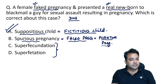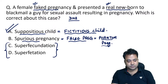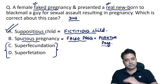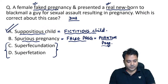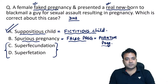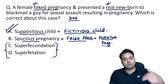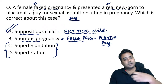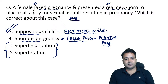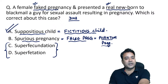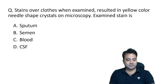Superfecundation and superfoetation — everyone should be aware of these, as covered in classes. Spurious pregnancy (also called false pregnancy or phantom pregnancy) arises due to psychogenic causes — emotional and traumatic factors can lead the female to genuinely believe she is pregnant when she is not.